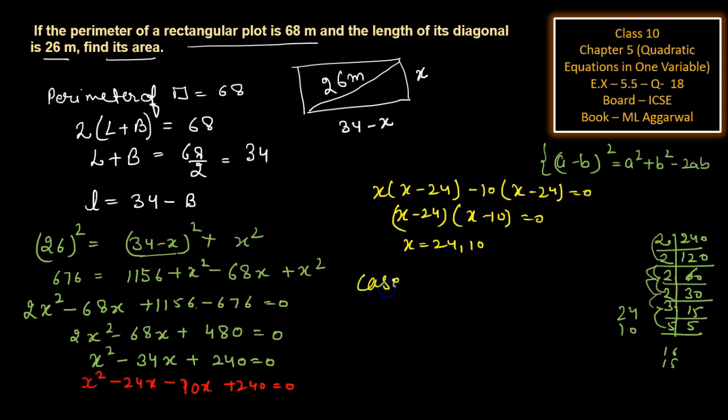Case 1: When breadth equals 24, then length equals 34 minus 24, which is 10. This is not possible because length is always larger than breadth.